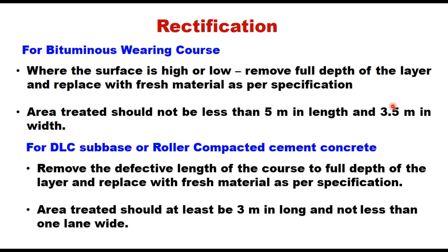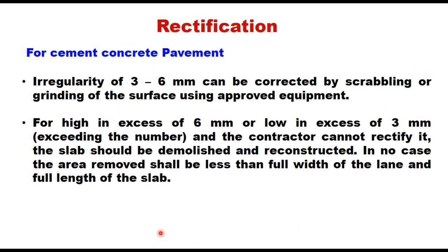In case of dry lean concrete or roller compacted concrete subbase in cement concrete pavement, remove the defective length to full depth of the layer and replace with fresh material as per specification. The area treated should at least be three meters long and not less than one lane wide. For cement concrete pavement, an irregularity of three to six millimeters can be corrected by scrubbing or grinding of the surface using approved equipment. For high in excess of 6 mm or low in excess of 3 mm where the contractor cannot rectify it, the slab should be demolished and reconstructed. In no case shall the area removed be less than the full width of the lane and full length of the slab.